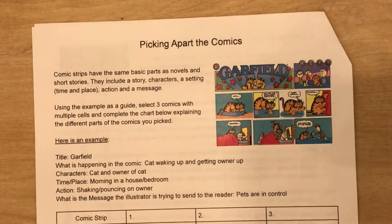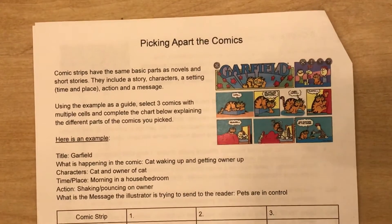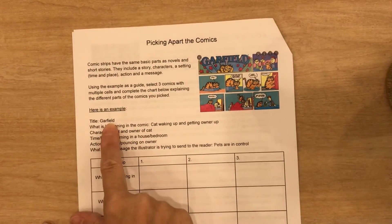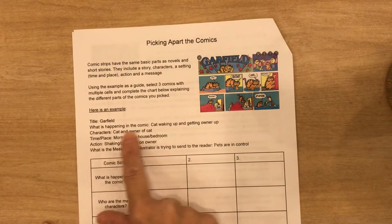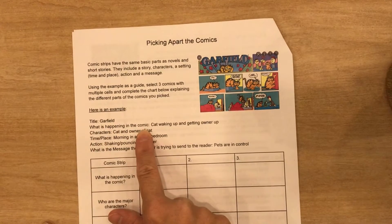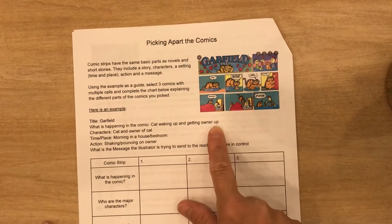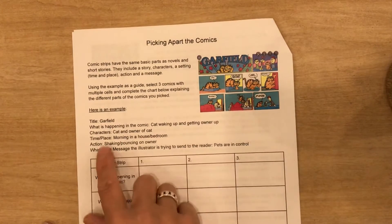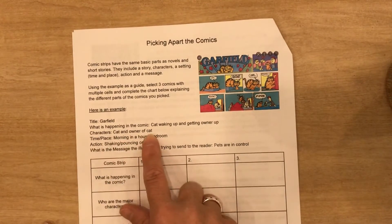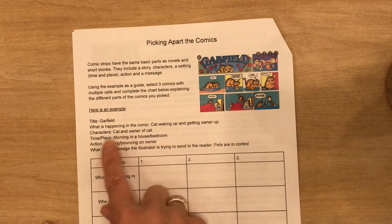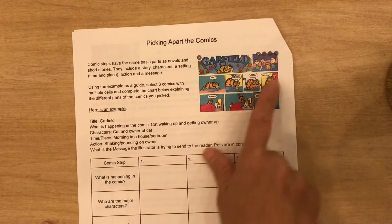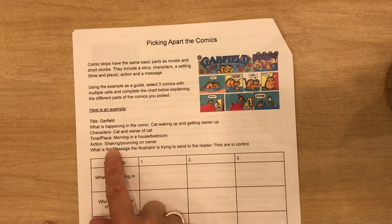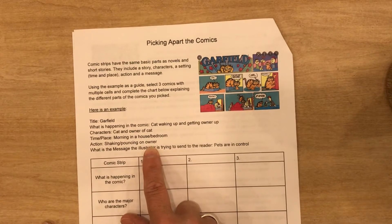So let's take a look at the title. The title of the comic is Garfield. What is happening in the comic? The cat is waking up, getting the owner up, and saying how great they are. Characters are the cat and the owner of the cat. The time and place would be morning in a house or a bedroom. The action is shaking and pouncing on the owner.